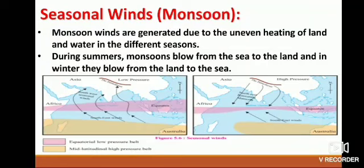Seasonal Winds — Monsoon. Monsoon winds are generated due to the uneven heating of land and water in different seasons. During summers, monsoons blow from the sea to the land, and in winter they blow from the land to the sea.